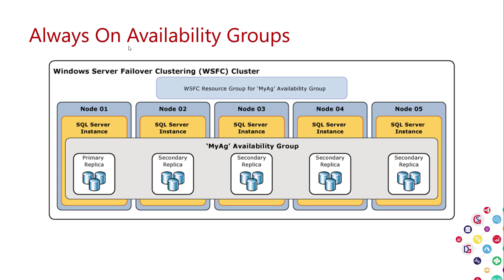Availability groups have a tighter method for directing connections to the current primary via a listener — a floating IP address assigned to the current primary. The listener IP address is separate from the node's primary IP and moves with the primary role. When connections are addressed to the listener, they automatically go directly to the current primary node. Clients don't need to know how many replicas are in the group — it all happens automatically.